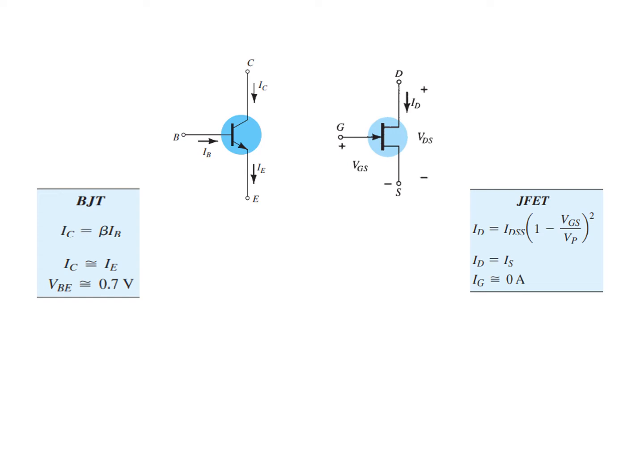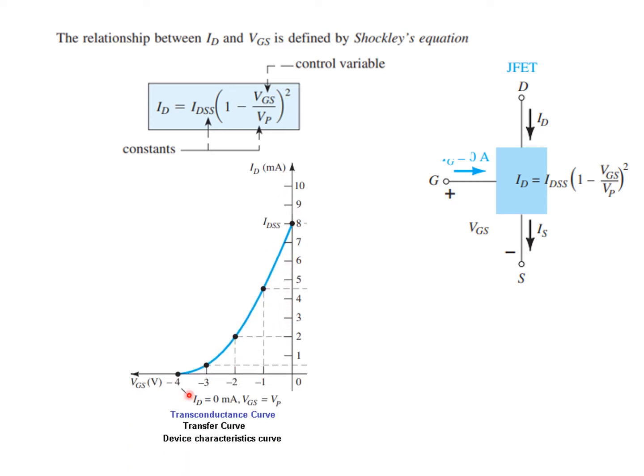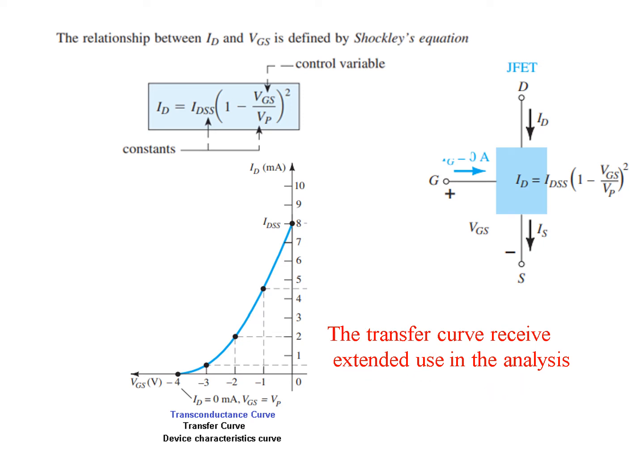Also, the drain current ID is equal to the source current, and the gate current IG is zero. In this equation, VG and ID are the two variables. IDSS is fixed for a particular transistor and VP is also fixed, which is why VG is called the control variable — it controls the behavior of the JFET. This curve is known as the transconductance curve or the transfer curve.